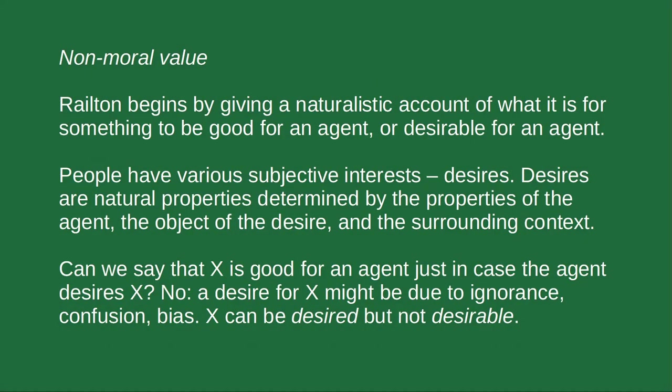He begins by proposing a realist account of non-moral value, and then he's going to use this to develop his account of moral value. We have this notion of something being desirable for an agent, or something being good for an agent. For instance, it's good for me to exercise, it's good for me to eat healthy food, to engage in conversations with friends, and so on. Can we understand this in a naturalist, realist way — this notion of something good for an agent?